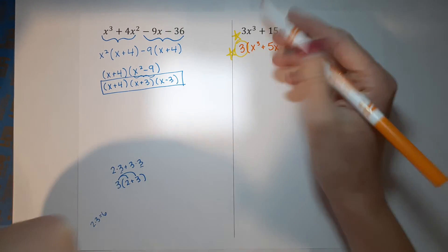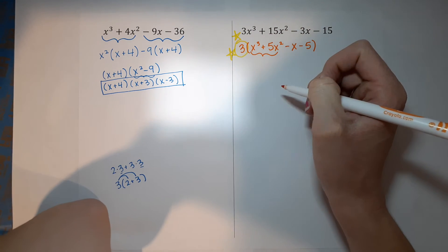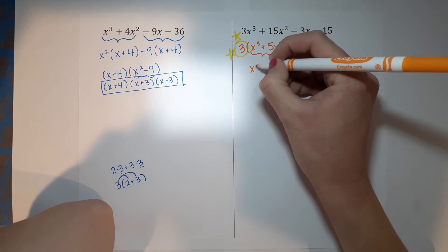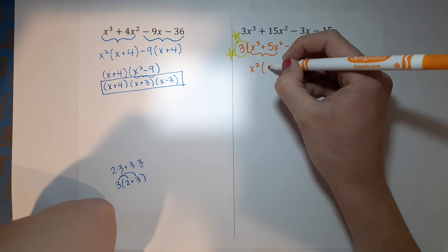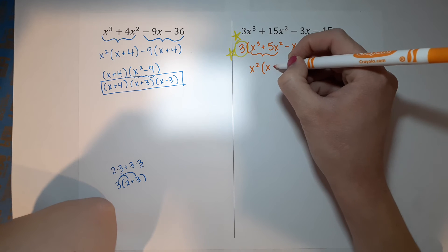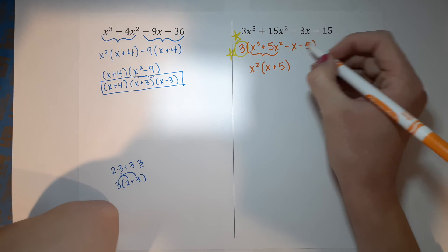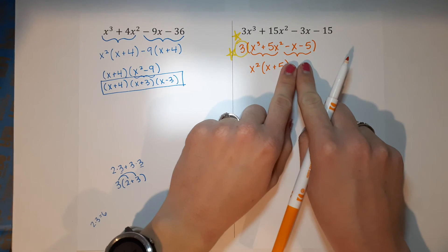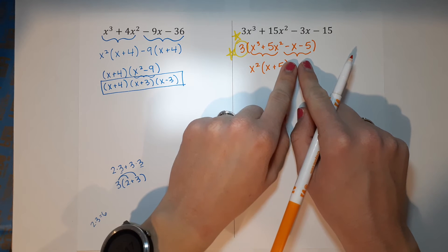Now I'm going to take the inside part and apply factor by grouping, just like I did on the first example. Looking at the first two terms: I can pull out an x². If I pull out that x², inside the parentheses I'm left with x plus 5.